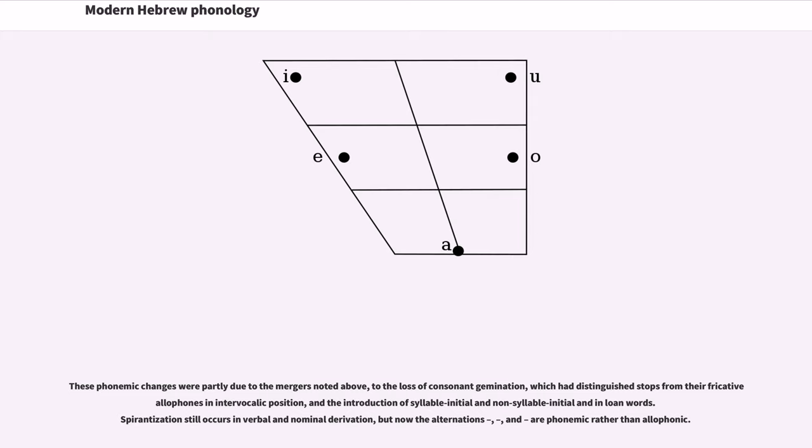These phonemic changes were partly due to the mergers noted above, to the loss of consonant gemination, which had distinguished stops from their fricative allophones in intervocalic position, and the introduction of syllable-initial and non-syllable-initial bet and pe in loan words. Spirantization still occurs in verbal and nominal derivation, but now the alternations bet-vet, kaf-khaf, and pe-fe are phonemic rather than allophonic.